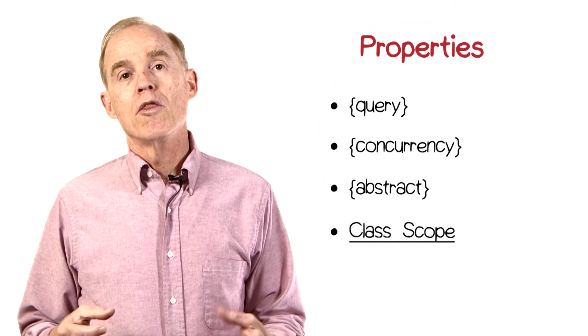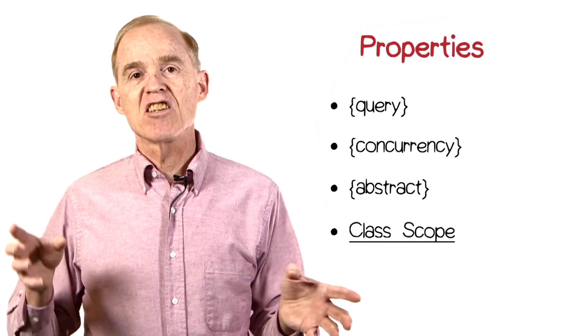You can also show that a particular operation has class scope. That's shown by an underline on the operation name. Class scope means that it's not an operation of a particular instance, but an operation for the class as a whole.